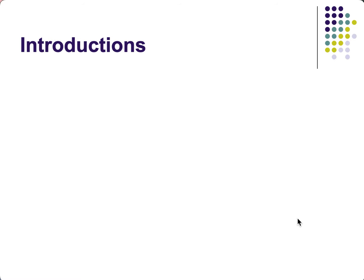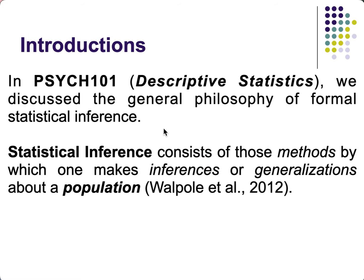In the previous course, Psych 101, which dealt with descriptive statistics, we discussed the general philosophy of formal statistical inference — only an introduction to what inferential statistics is. When we say statistical inference, this consists of those methods by which one makes inferences, generalizations, or conclusions about a population.